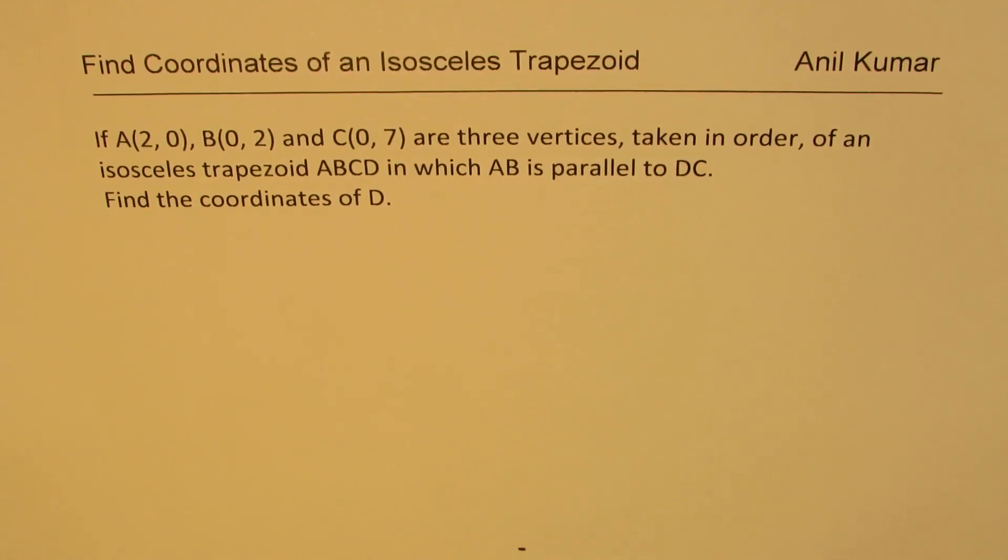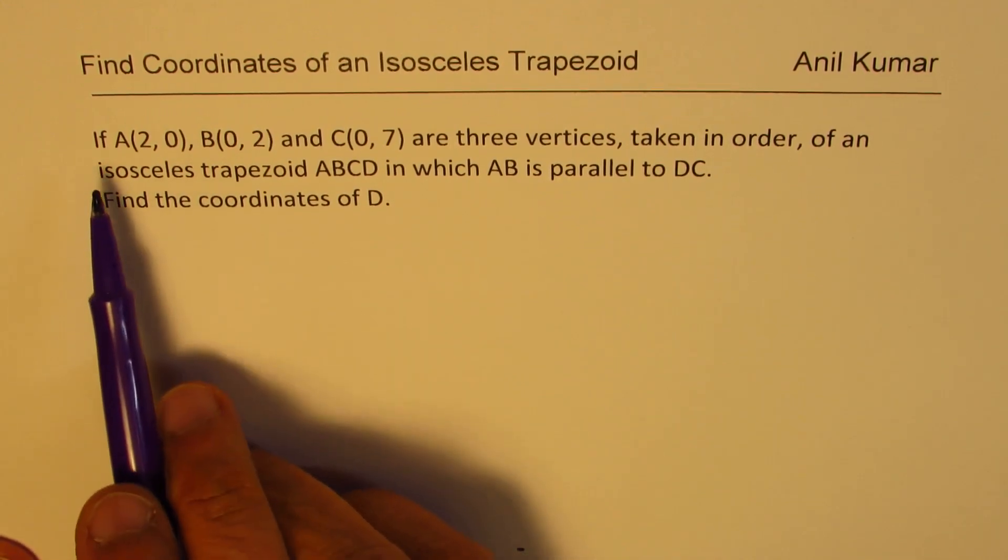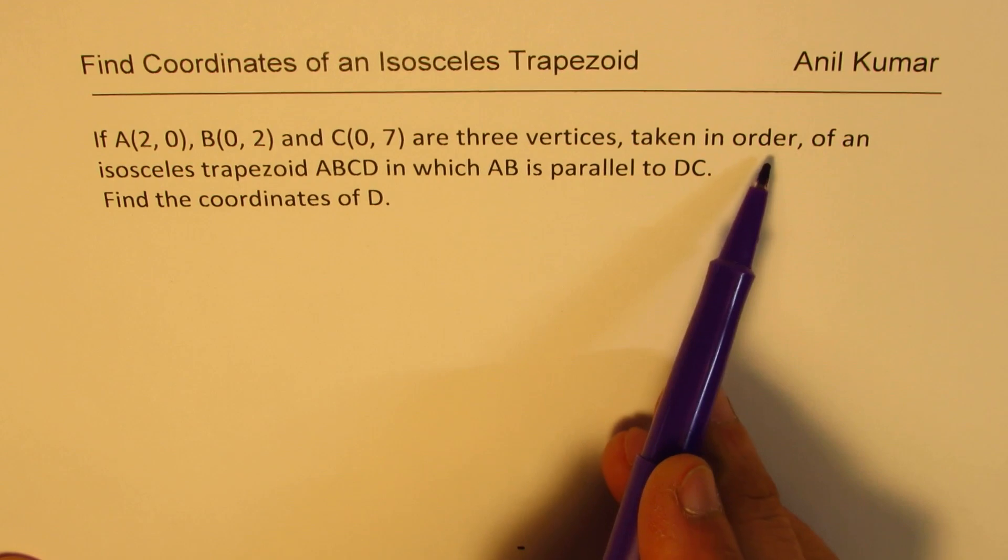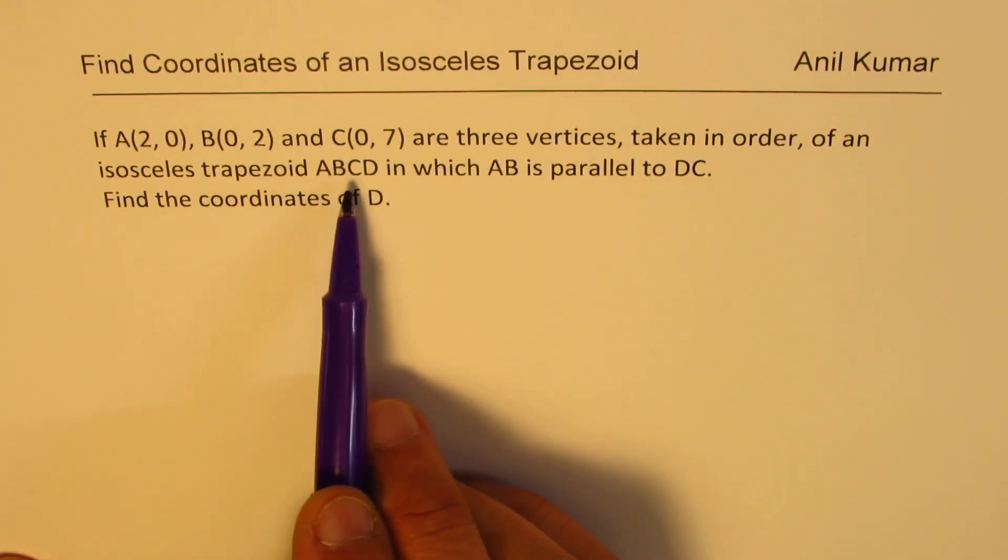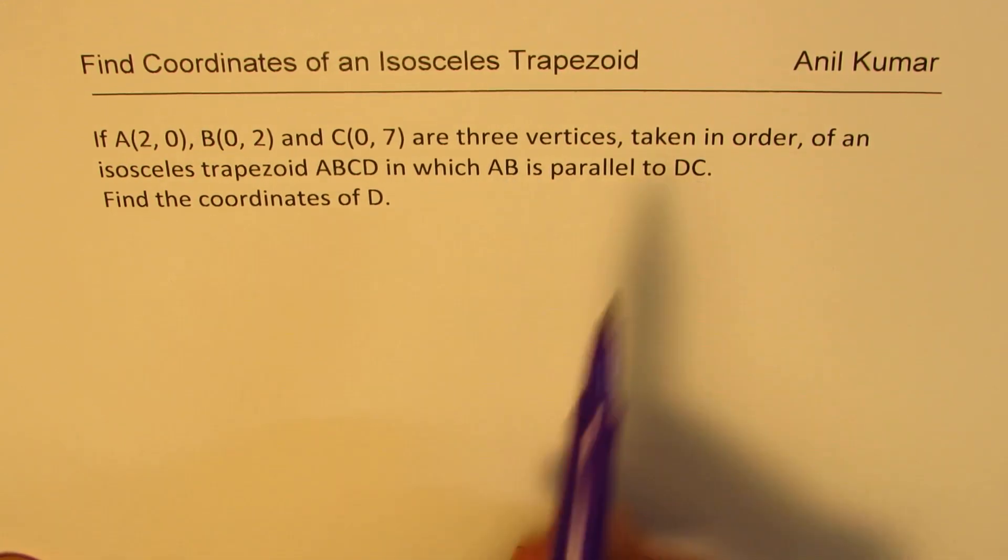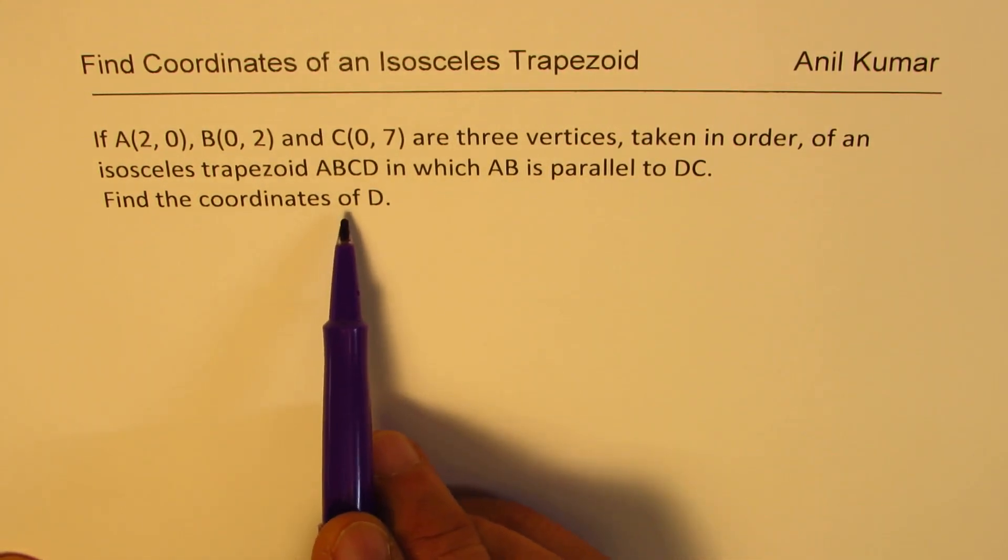I'm Anil Kumar. Welcome to this video where we are going to find the coordinates of an isosceles trapezoid. The question here is if A(2,0), B(0,2) and C(0,7) are three vertices taken in order of an isosceles trapezoid ABCD in which AB is parallel to DC, find the coordinates of D.